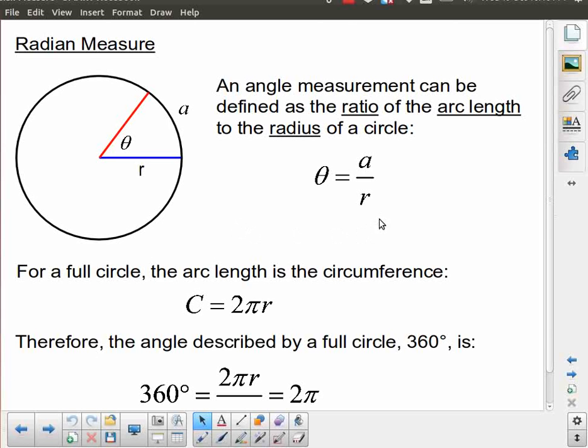So the way that we get to radian measure is that we define an angle as the ratio of the arc length compared to the radius. So the arc length is if you started at this point on the circle and you started walking along the circumference of the circle. If you walked a certain distance along that circumference and you divided that distance by the radius of this circle, that would be one way that we could define the angle that you had actually walked around.